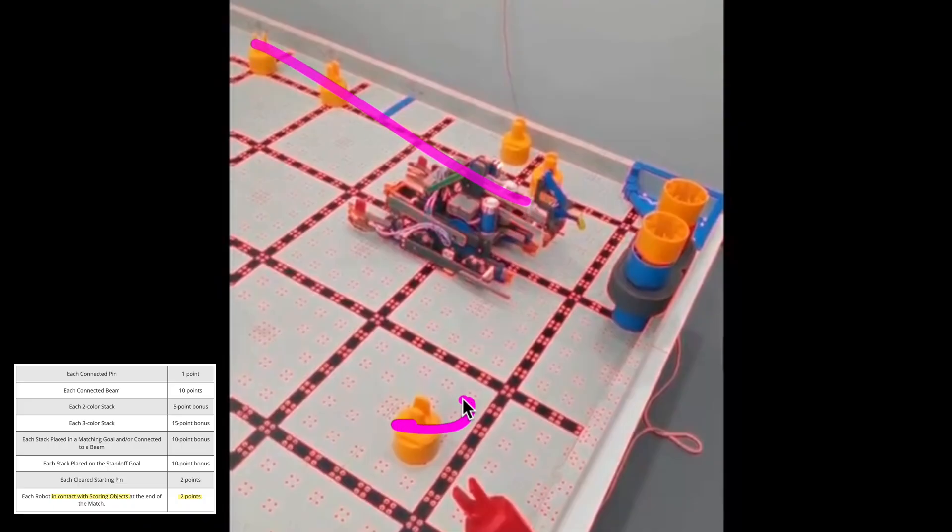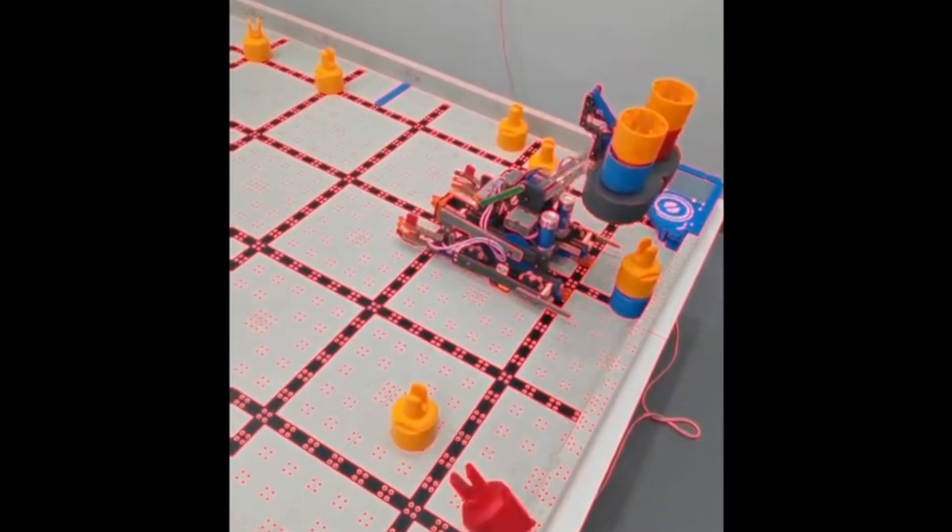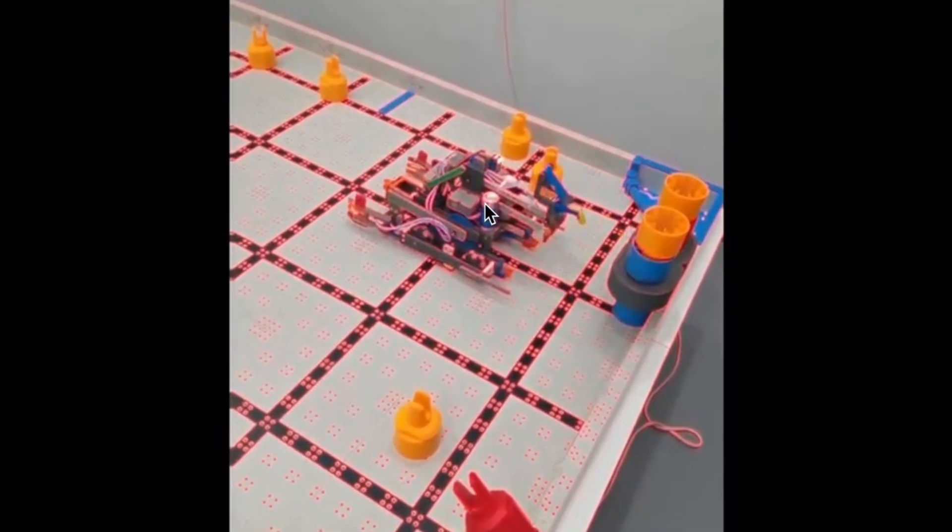Look at all these game objects around it, or maybe even knock off a starting pin. That would give you the two point end game bonus. Even a more crazy strategy would use these four seconds to go and get another stack down.